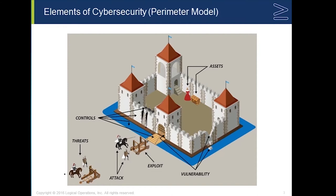Here we're going to take a look at the elements of cybersecurity. This is the older, or legacy, perimeter model. First, we have our assets — assets are anything of value inside of our organization. On the outside, right outside of the castle walls, we have the threats. Threats are anything that can cause damage to our assets should they try to attack. We define an attack as a deliberate attempt to gain access to our assets. These threats are going to gain access to our resources by exploiting vulnerabilities.